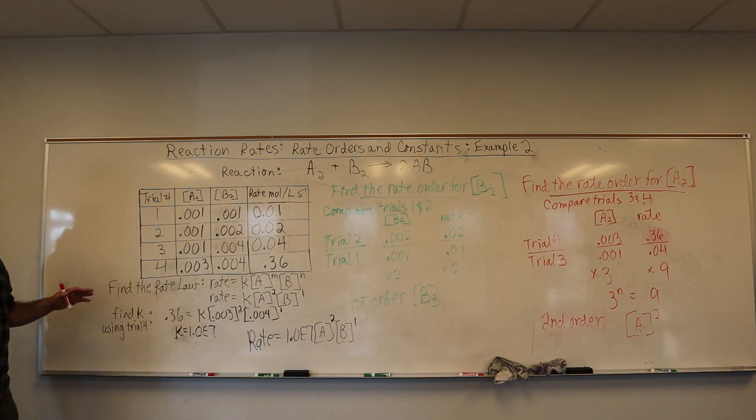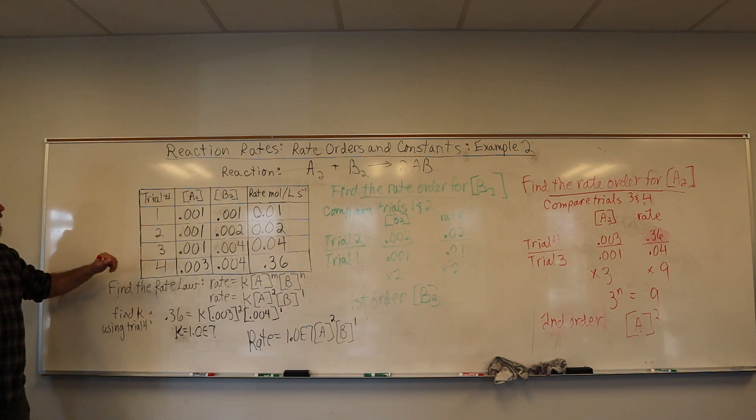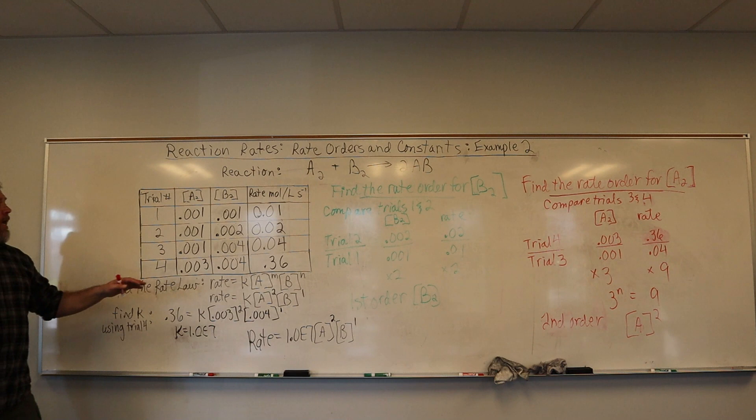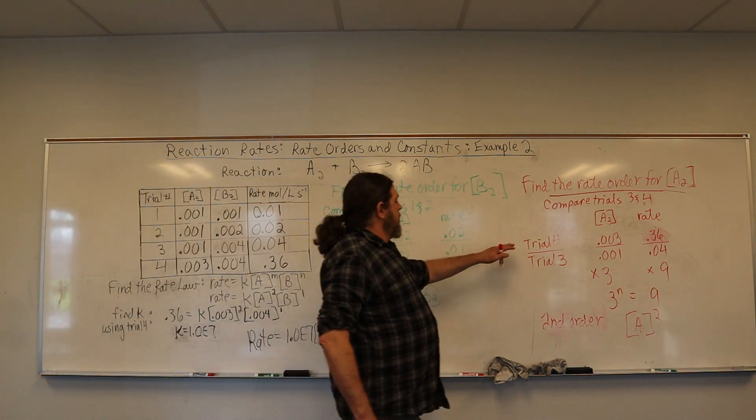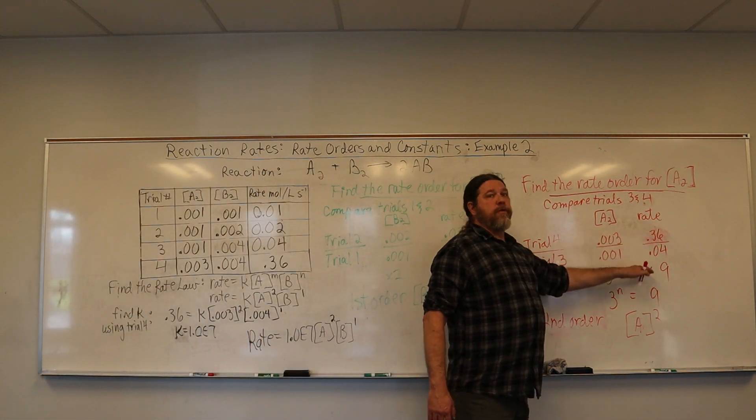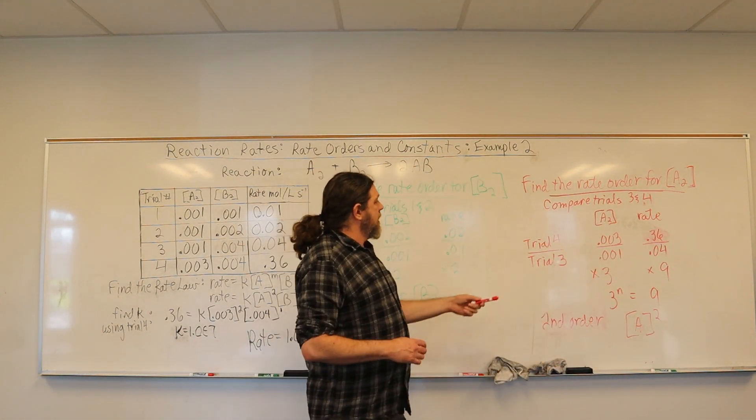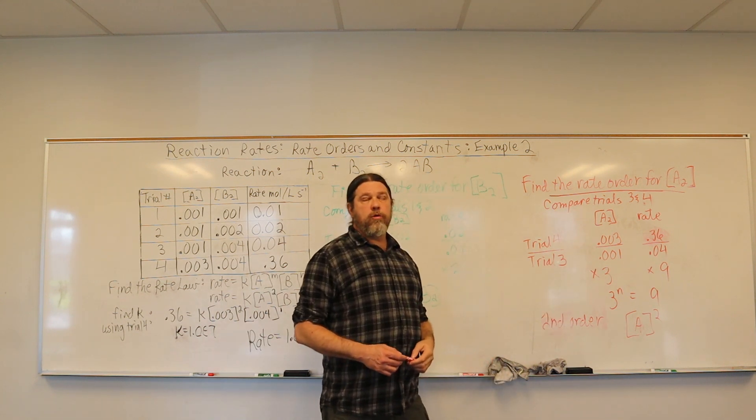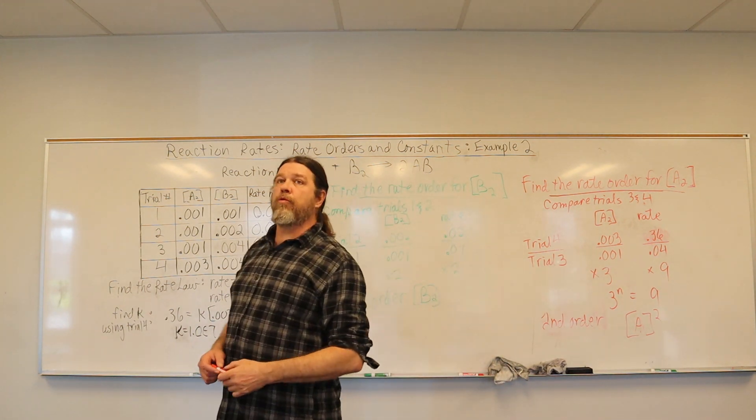What we do is we look at where we break it down for one reactant at a time. So let's take a look at reactant A. We notice trials 3 and 4 are where reactant A gets changed, and we see it is causing a change in the rate, but to what degree? So we simply compare the two trials in terms of concentration and in terms of rate. And we see that a three-fold concentration change results in a nine-fold change in rate.